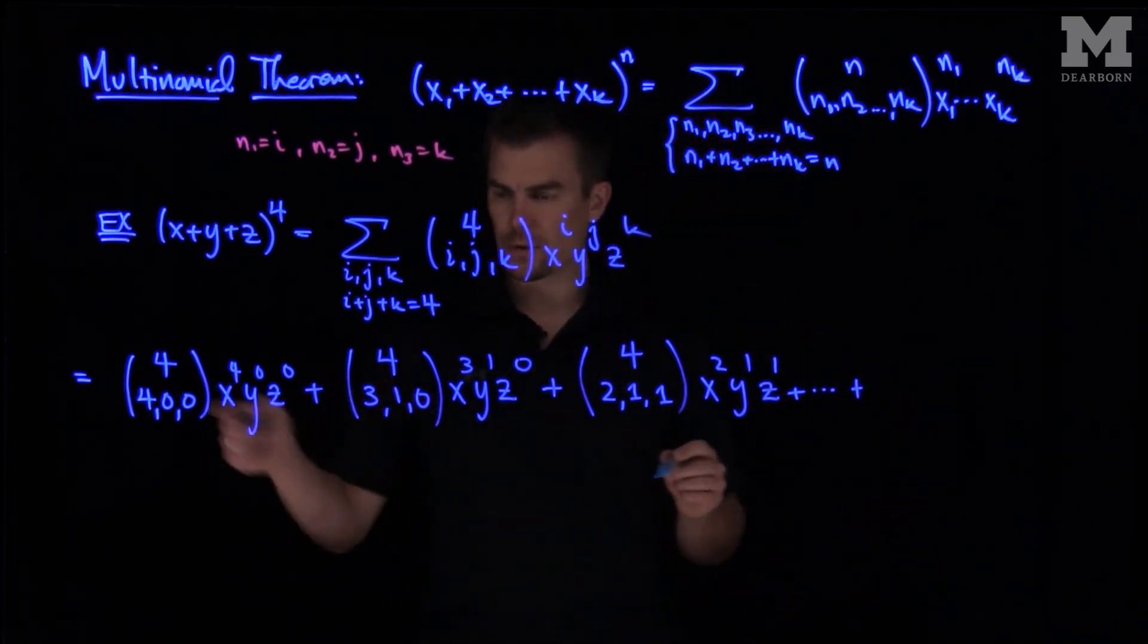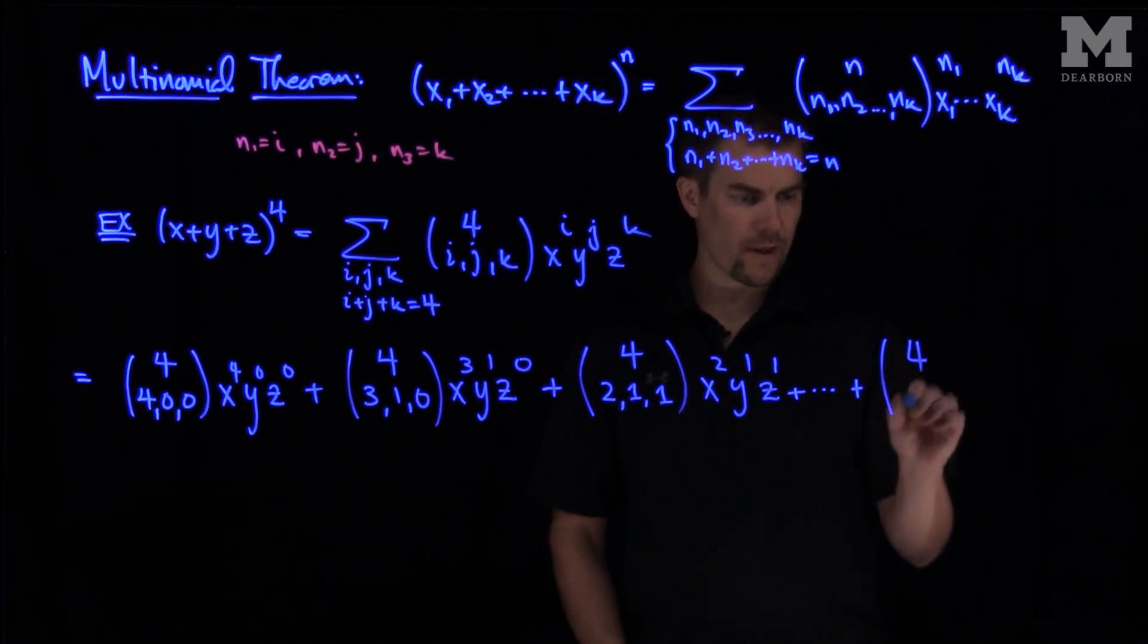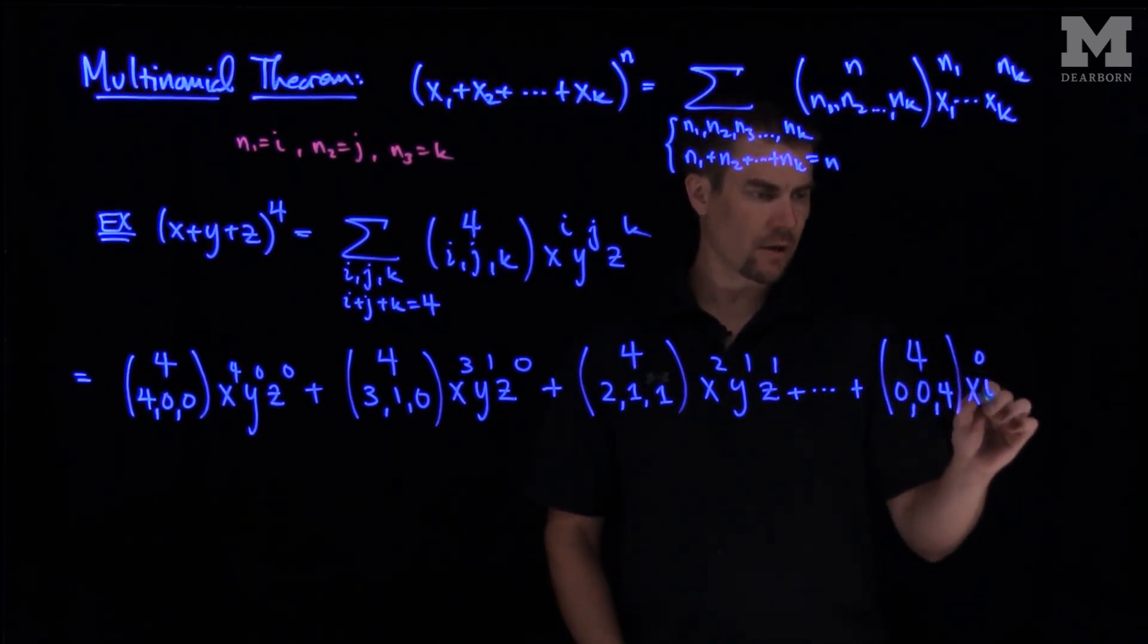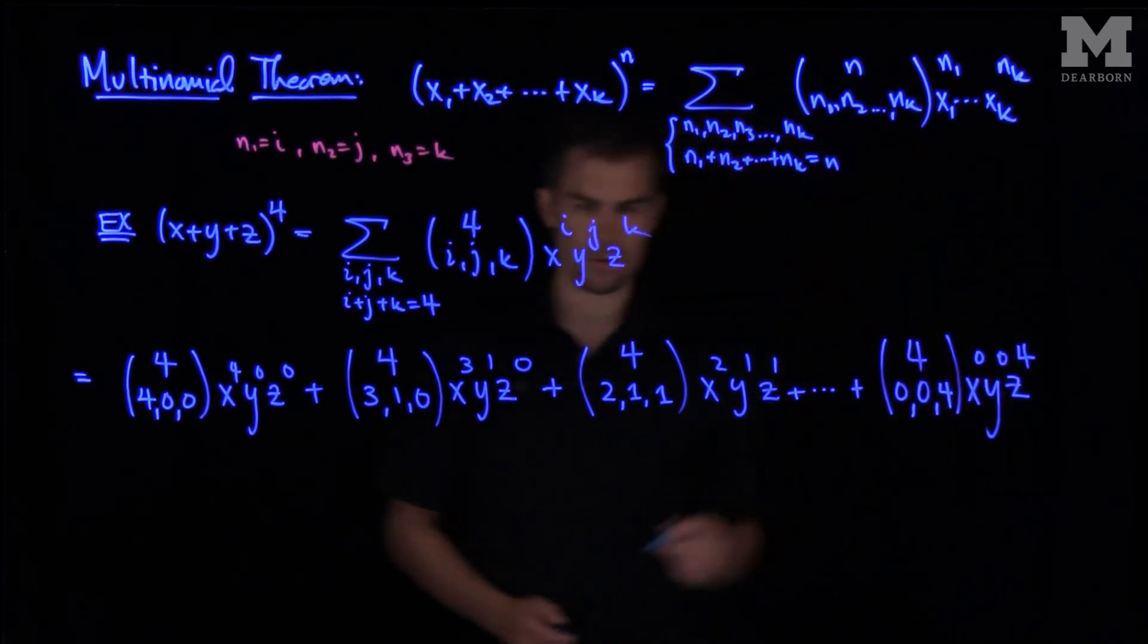And let's say that the last one corresponds to z being equal to four. So we'll have a four, and then we'll have a zero, zero, four. We'll have an x⁰y⁰z⁴.